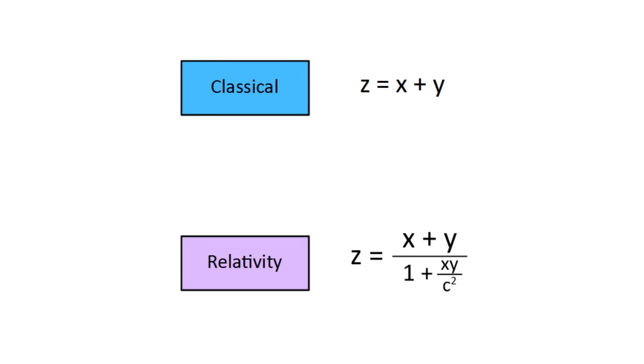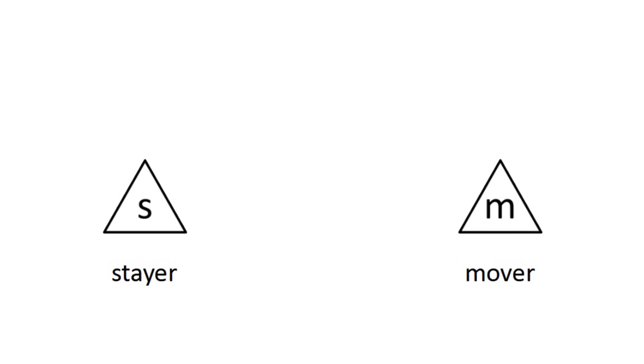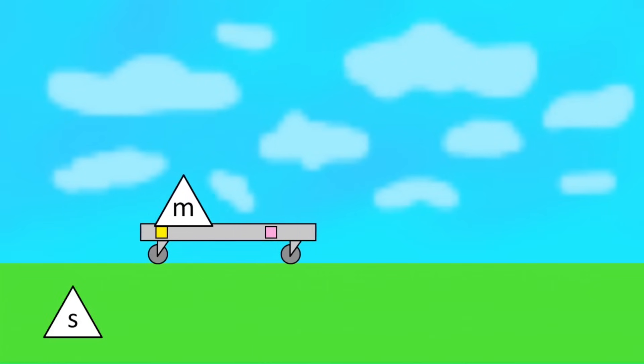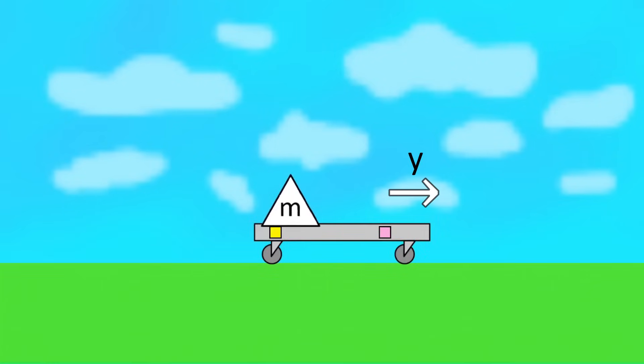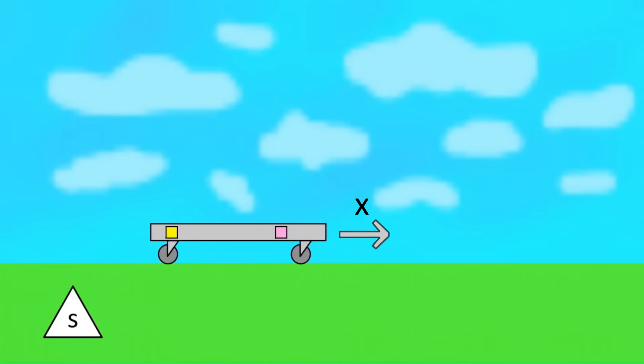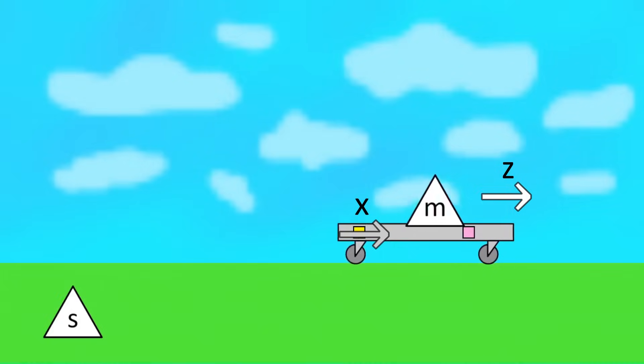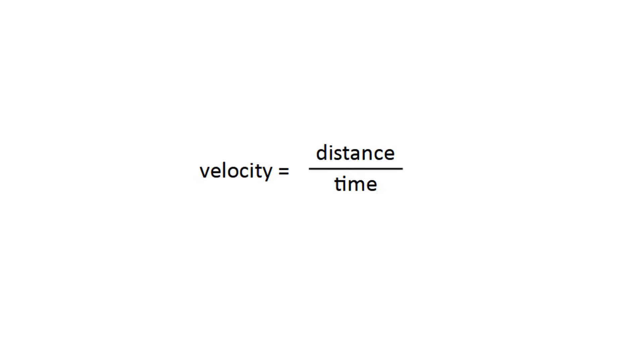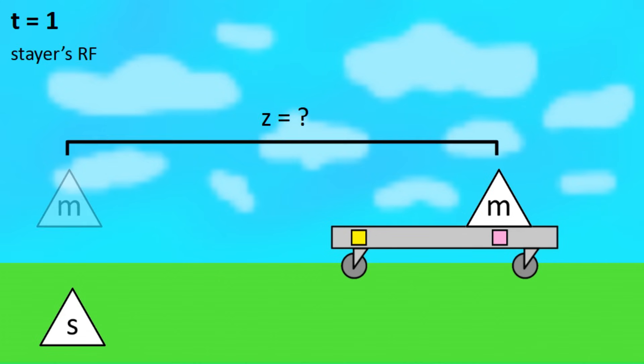Imagine there are two observers, stair and mover. The stair stays on the ground, while the mover runs on a platform which is also moving. If the mover's running speed is y meters per second, and the platform moves at x meters per second, then what is the total velocity z of the mover in stairs perspective? Obviously, it's z equals x plus y, but why? Well, velocity is distance over time, so z is just going to be the mover's position after one second.